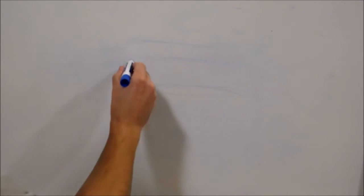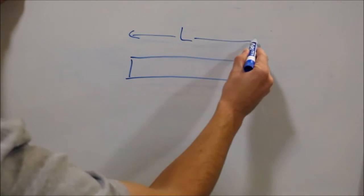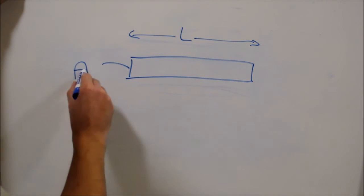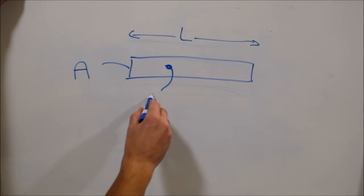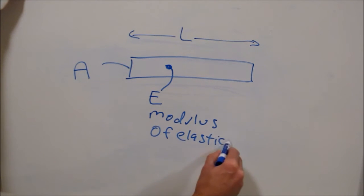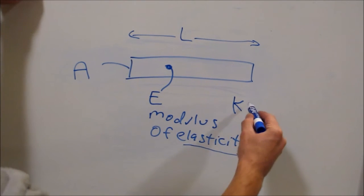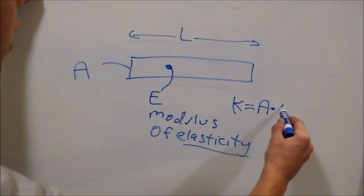Now instead of a spring, let's consider a simple rod that has some length L and some cross-sectional area A. It's also made out of a material and it has some sort of property called E, which is known as the modulus of elasticity. The modulus of elasticity is essentially a measure of how stiff a material is. Now the spring rate for a rod like this simple rod is k is equal to the area times the modulus of elasticity over L.